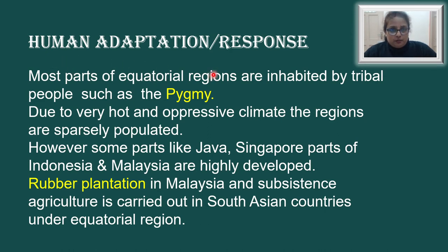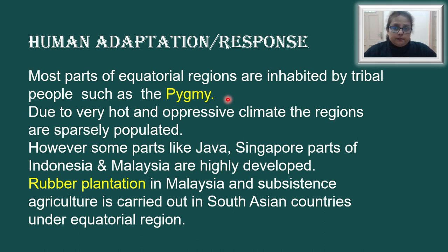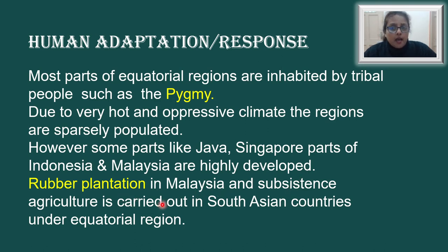As far as human adaptation and response is concerned, most parts of the equatorial regions are inhabited by tribal people such as pygmies, especially in the Congo Basin. Elsewhere, in the Amazon, there are several different tribes. The forests are so dark and thick that people living deep inside have almost no contact with the outside world. Due to the very hot and oppressive climate, the regions are very sparsely populated. However, some parts like Java, Singapore, and parts of Indonesia and Malaysia are highly developed. Rubber plantations in Malaysia and subsistence agriculture are carried out in South Asian countries under the equatorial regions.